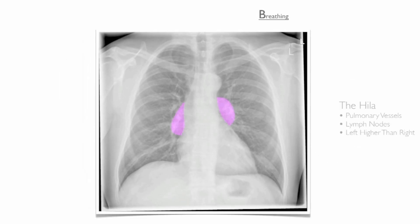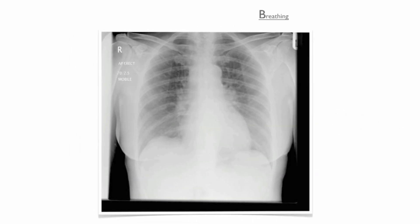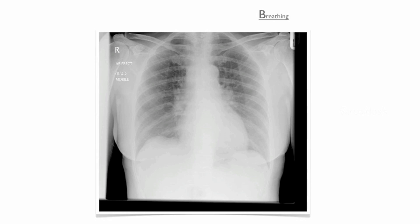After reviewing the lung zones, look at the hyla. Hyla contain the pulmonary vessels and lymph nodes, and may become more prominent in some diseases. Bilateral hyla lymphadenopathy is a frequent presentation seen in exams. Whenever you see this presentation, your differentials should include sarcoidosis, tuberculosis and lymphoma.